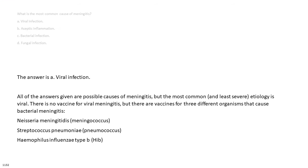The answer is A. Viral infection. All of the answers given are possible causes of meningitis, but the most common, and least severe, etiology is viral. There is no vaccine for viral meningitis, but there are vaccines for three different organisms that cause bacterial meningitis: Neisseria meningitidis, Streptococcus pneumoniae (pneumococcus), and Haemophilus influenzae type B (Hib).